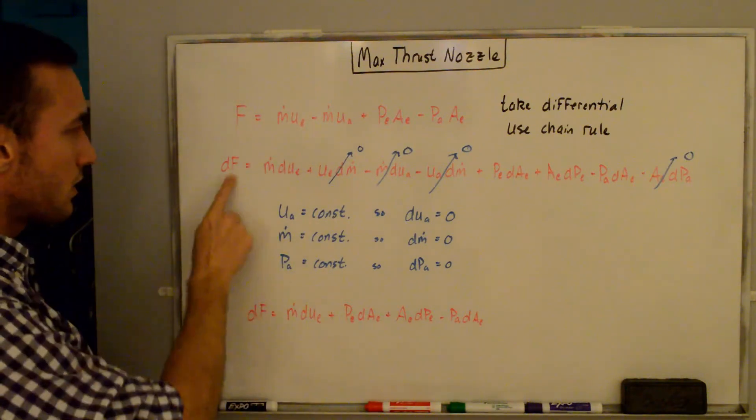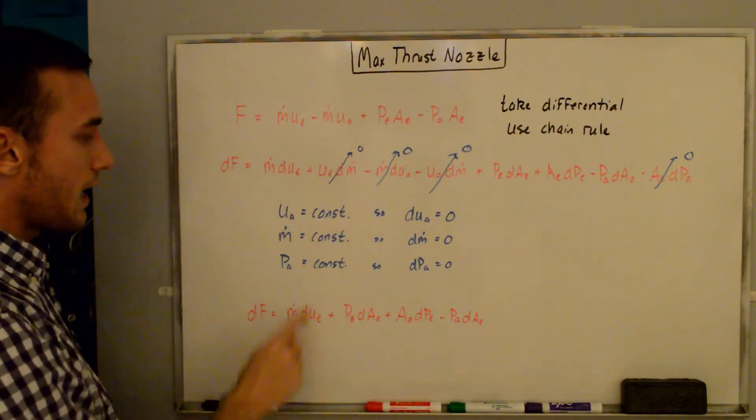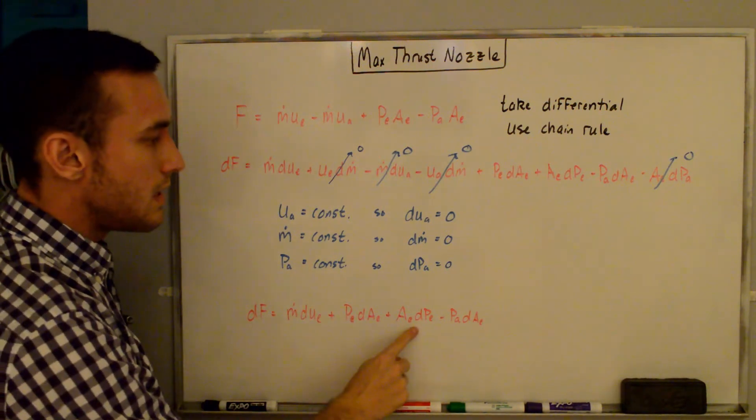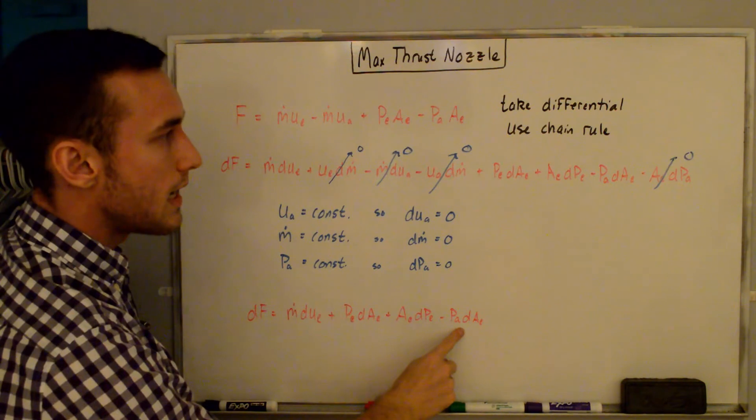And so I've just rewritten this equation up here, just without the zero terms. And so we have ṁduE plus pEdAE plus AEdpE minus pAdAE.